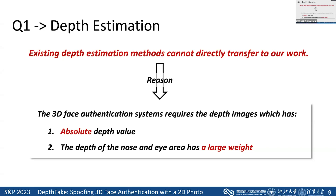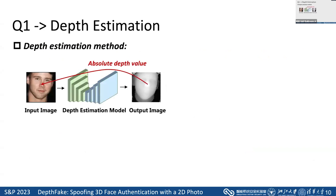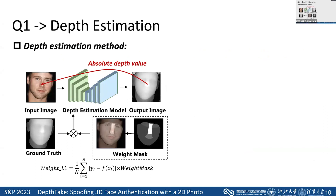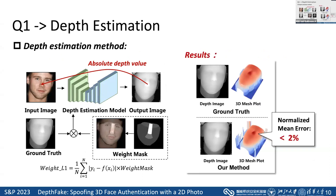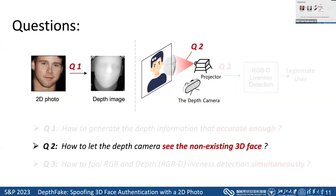Thus, we propose a depth estimation method. We build a CNN-based model and use it to estimate the depth image from a single 2D photo, where each pixel in the depth image represents the absolute depth value as it is in the real world. To improve accuracy of depth estimation in the nose and eye regions, we designed a weighted L1 loss to let our model reconstruct a more accurate depth image. Compared with the ground truth image and its 3D mesh plot, we can successfully reconstruct the depth image, and the normalized mean error is less than 2%.